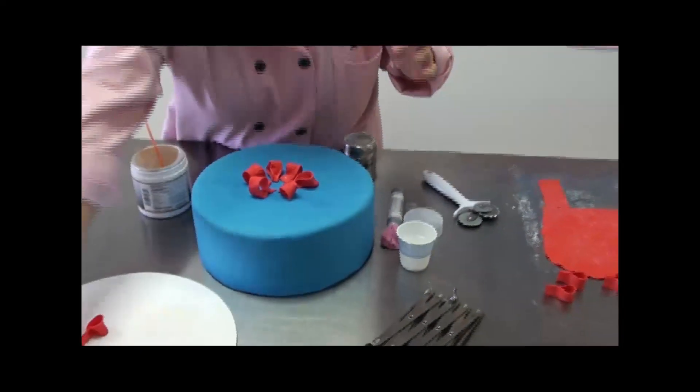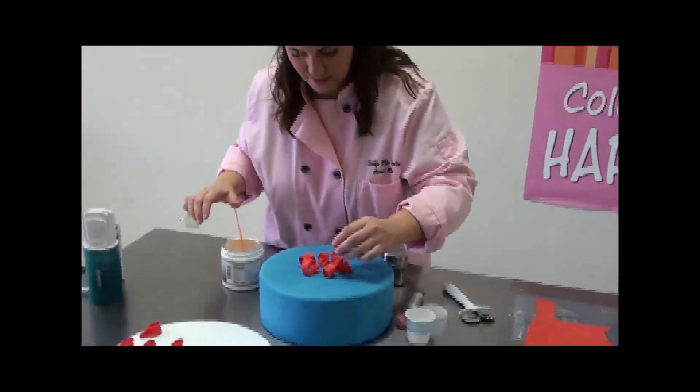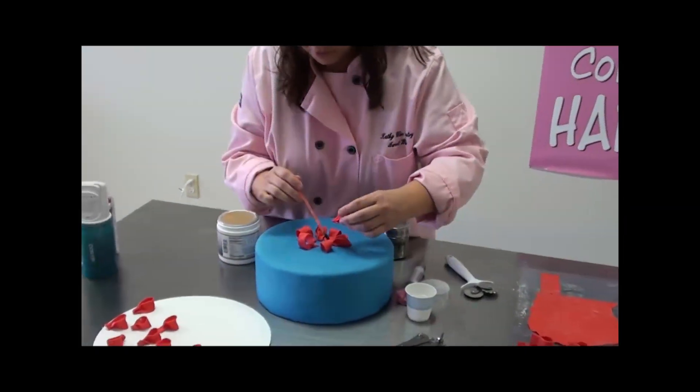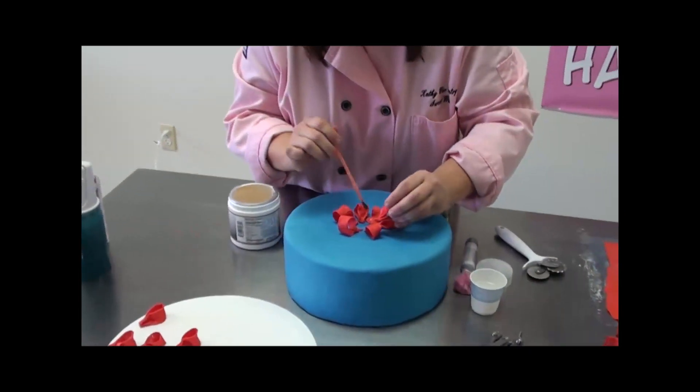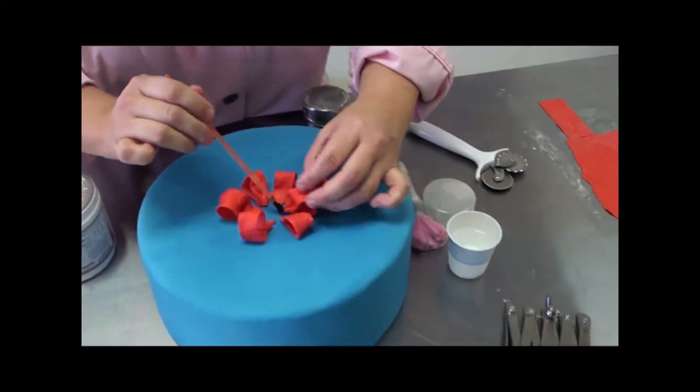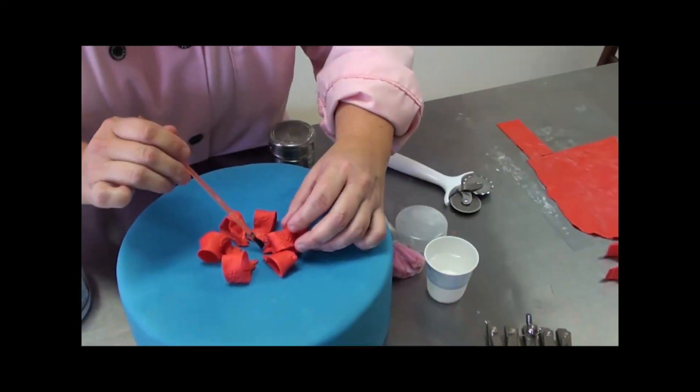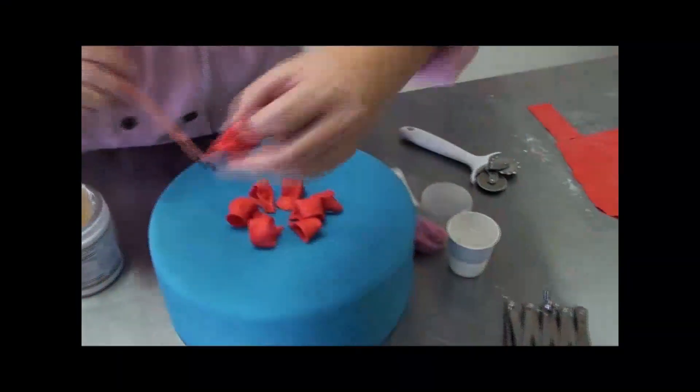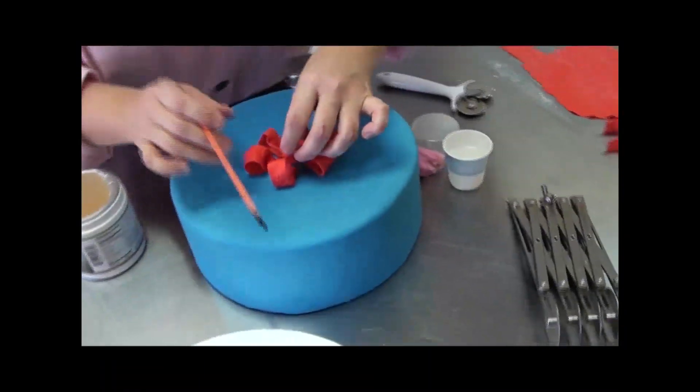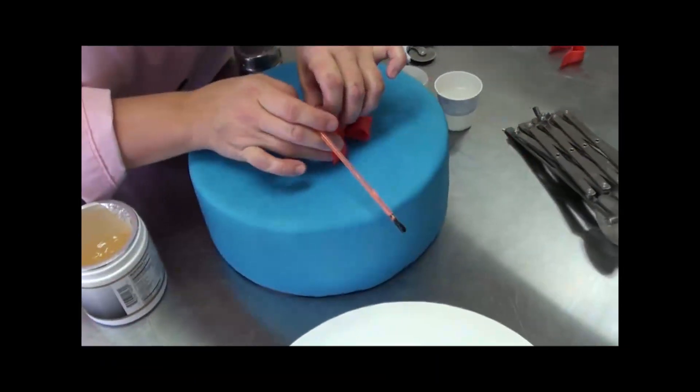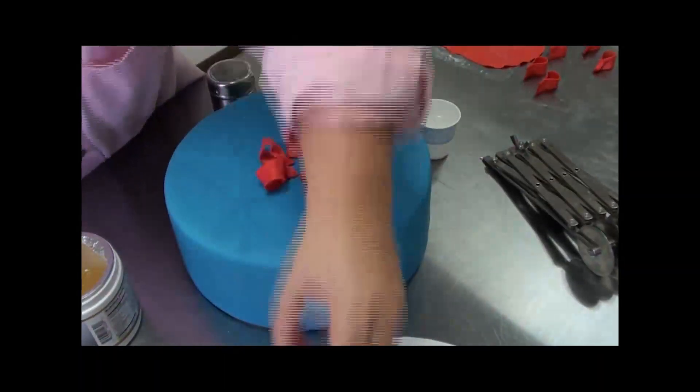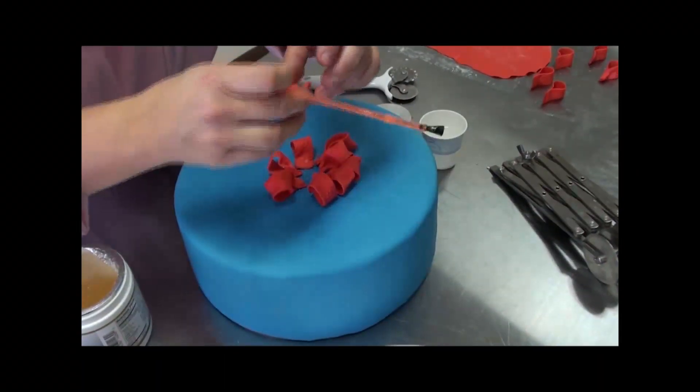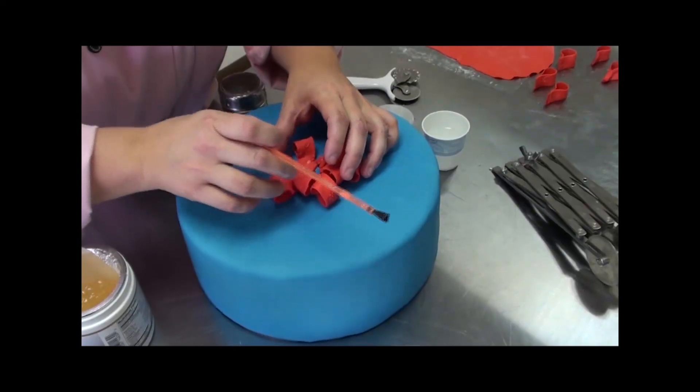Now the second row is a little bit easier. It's really not rocket science. You can just start laying them in there as you go. A little bit of piping gel there to hold it in place. And you're just going in between each of the loops that are underneath. Filling in.